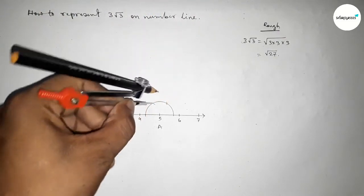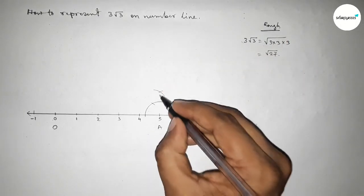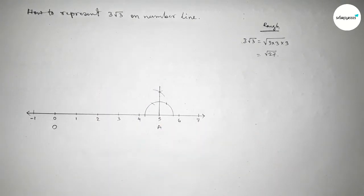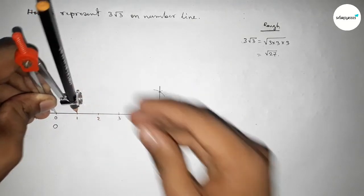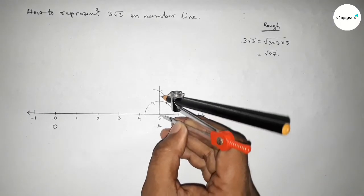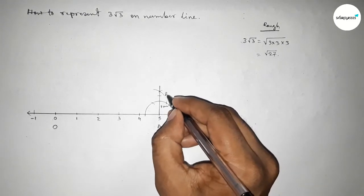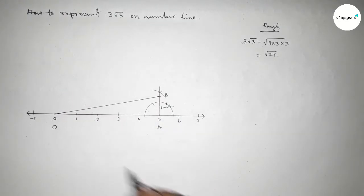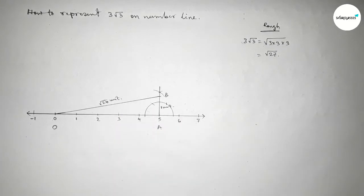Taking the same length, we cut here and draw an arc again with the same length, so both curves intersect at a point. We join this to get the perpendicular. Then we take one unit length and mark point B. Joining O and B gives us right angle triangle OAB, and OB is obviously √26 units.